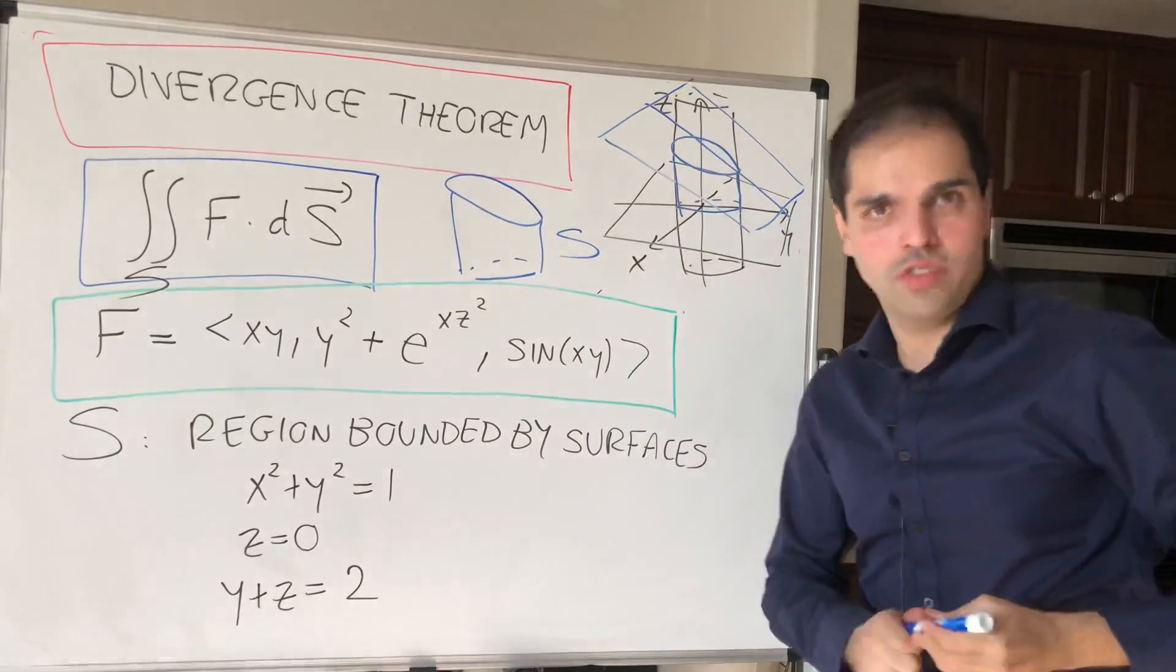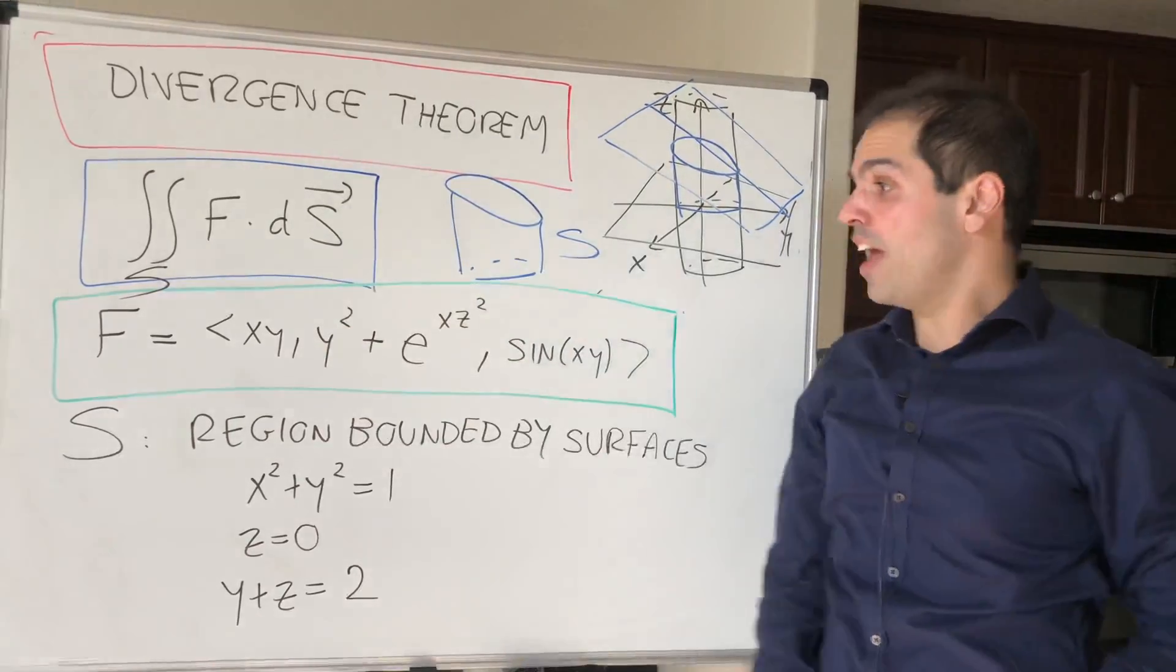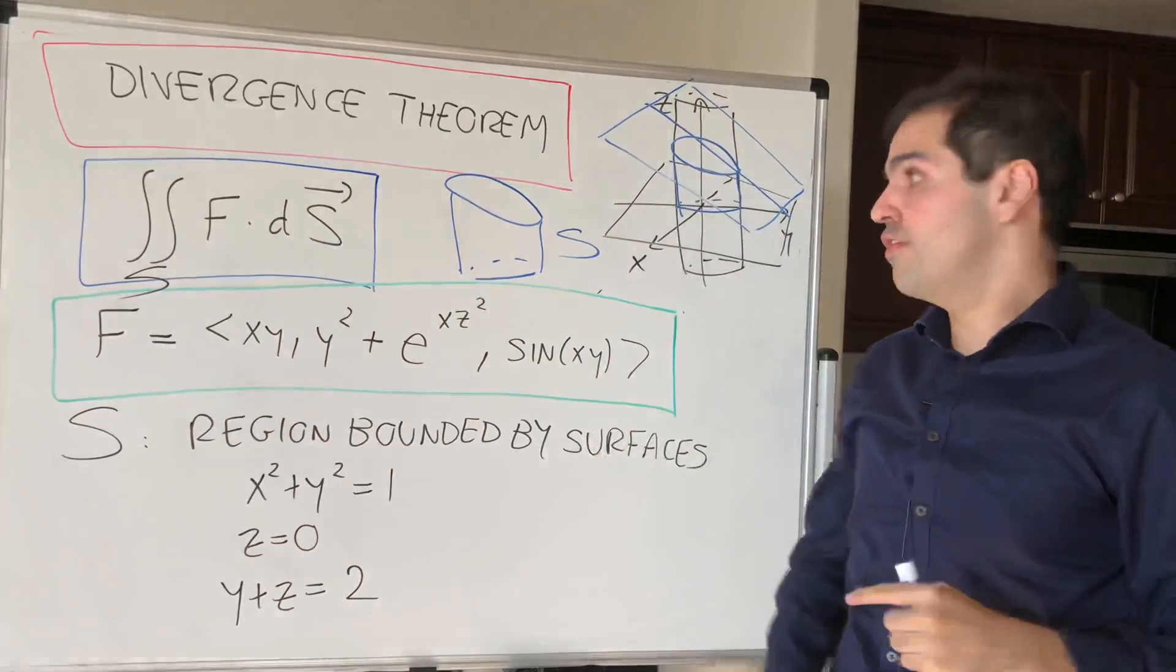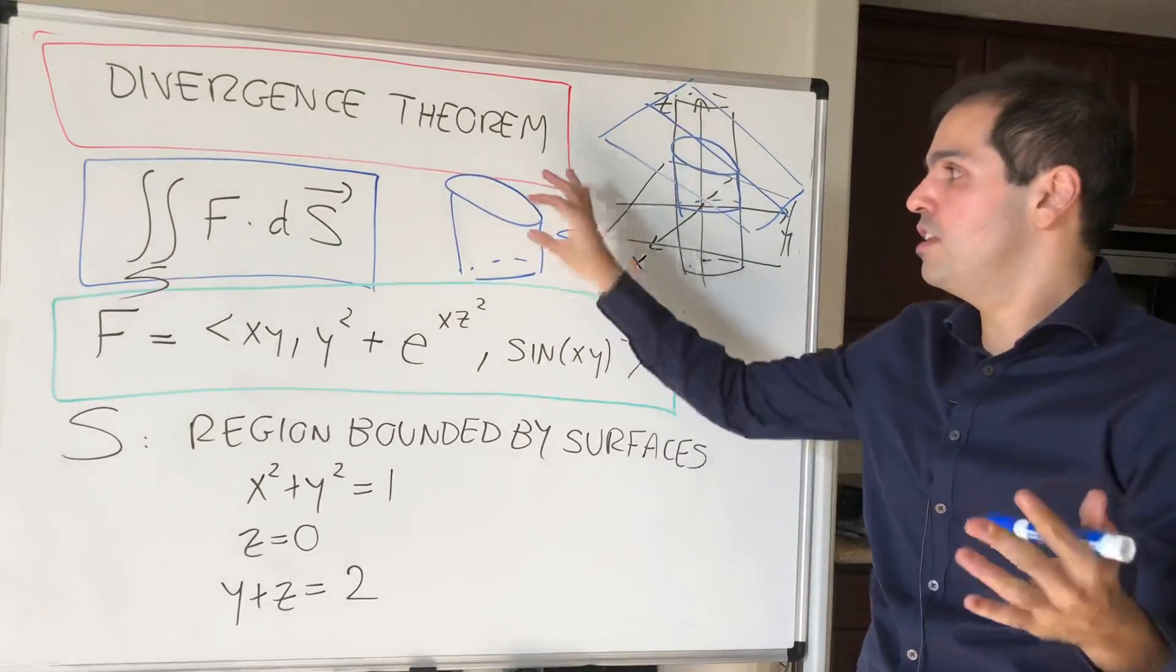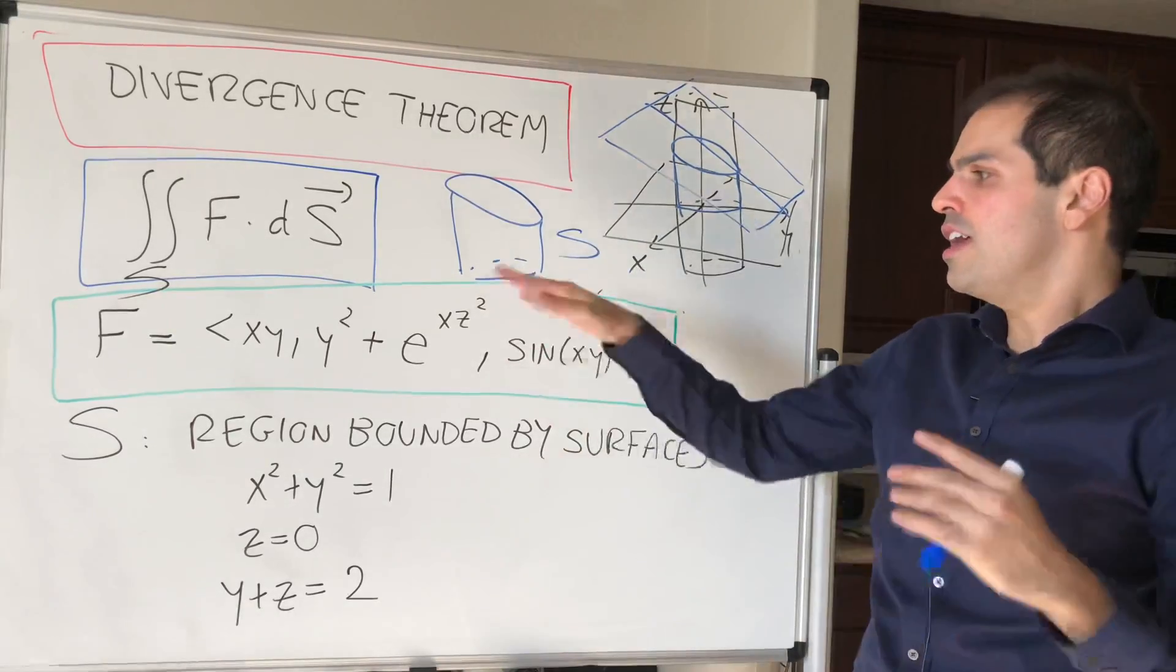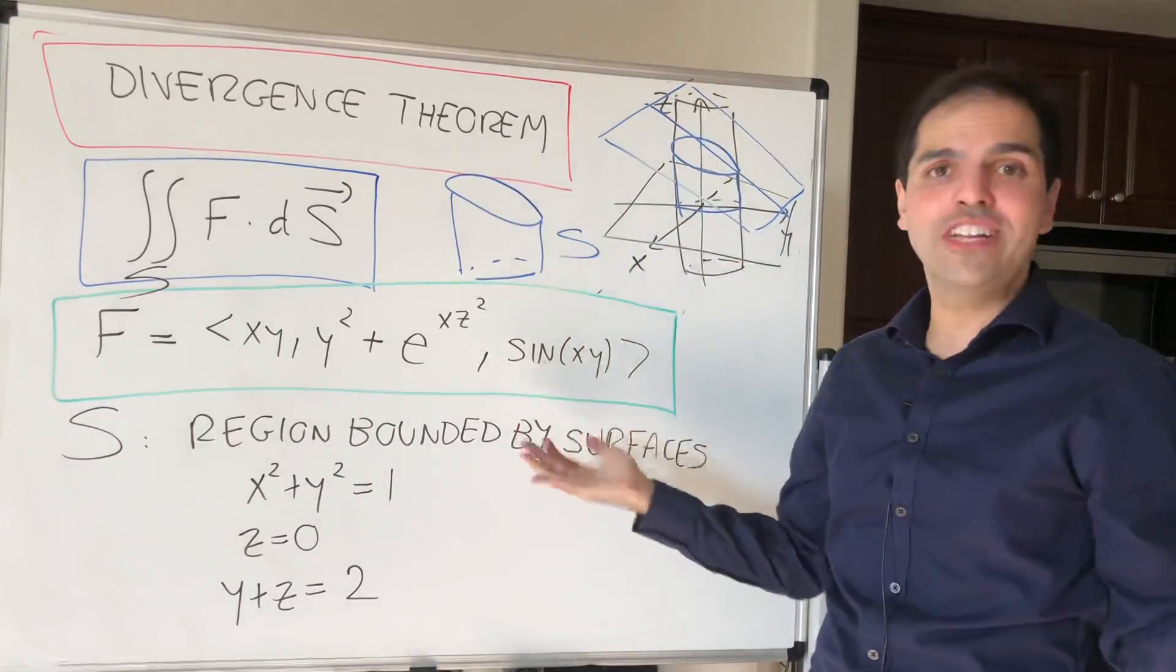And you have to understand, if you wanted to do this surface integral directly, you would have to do a lot of things. You would have to split up S into three regions, into three distinct surfaces, and calculate this horrible surface integral over each piece.